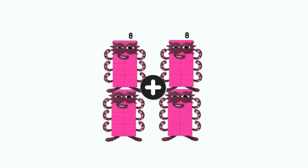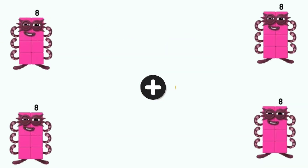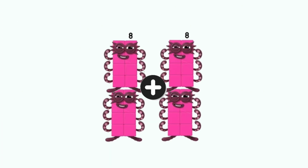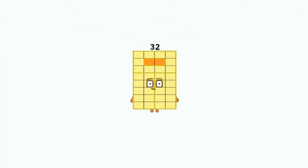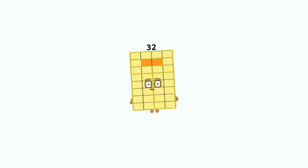Number blocks: eight plus eight, and as many as four times, equals thirty-two.